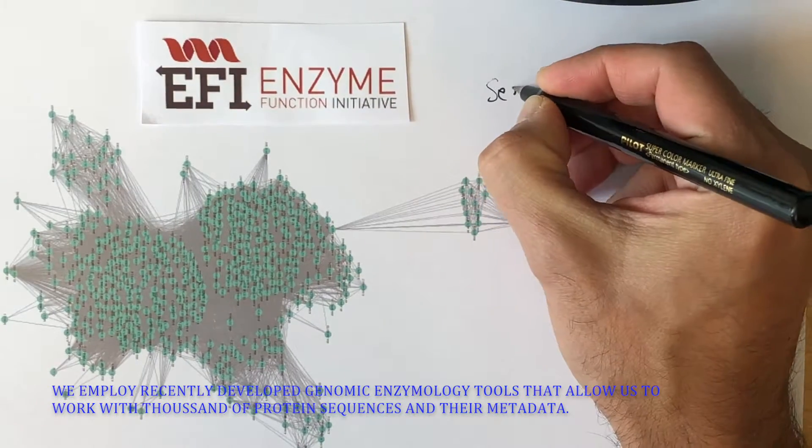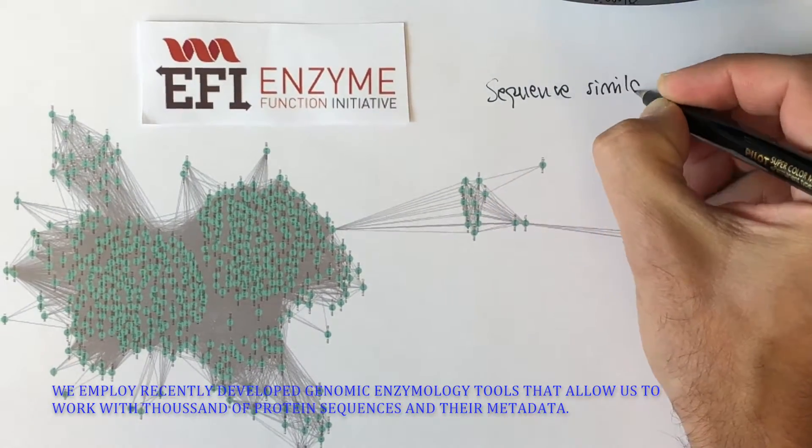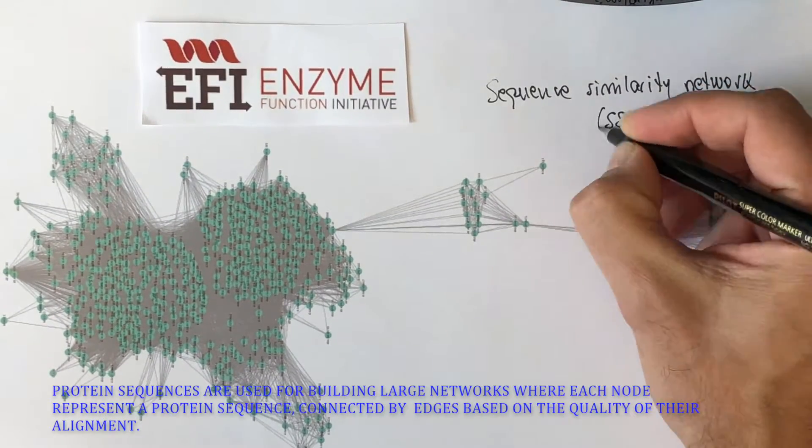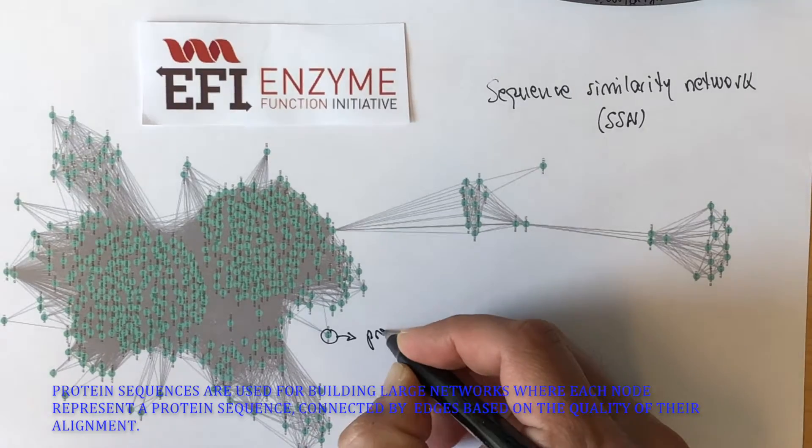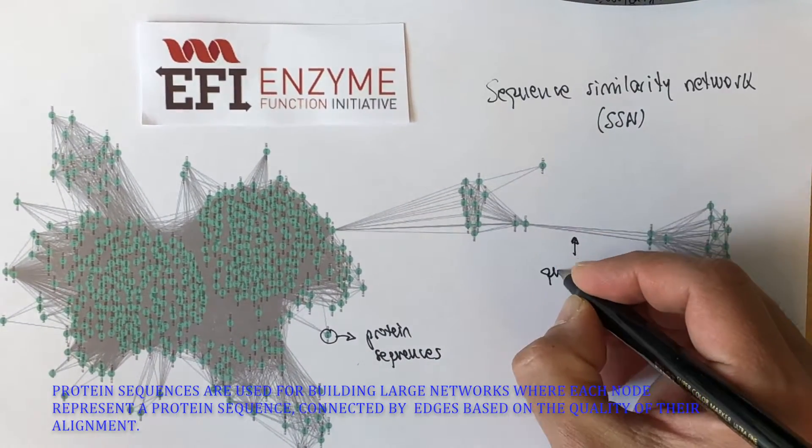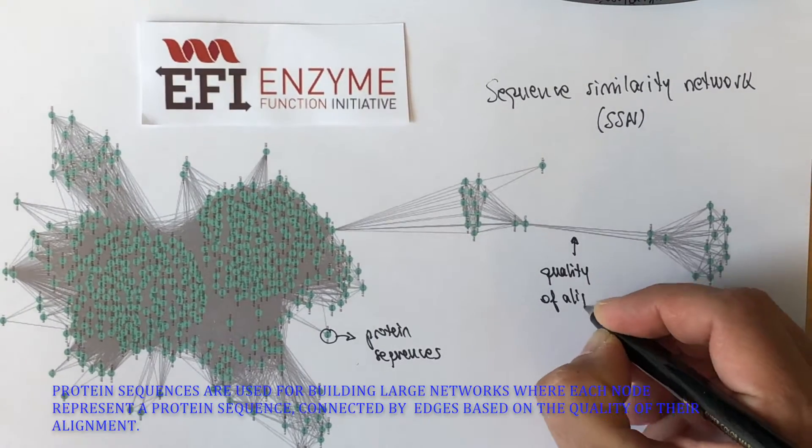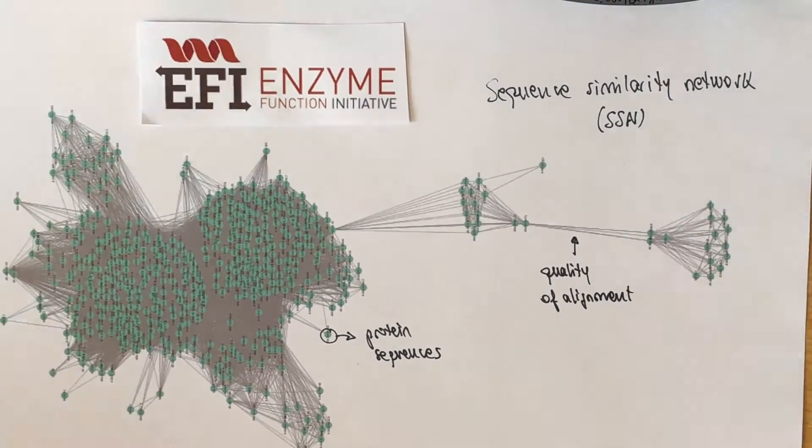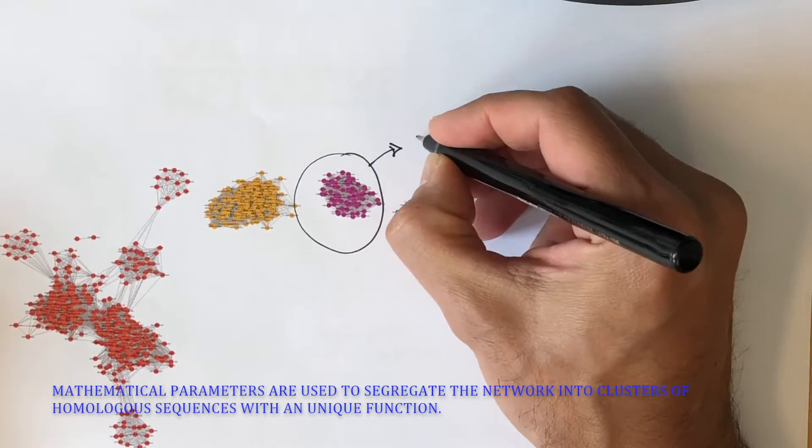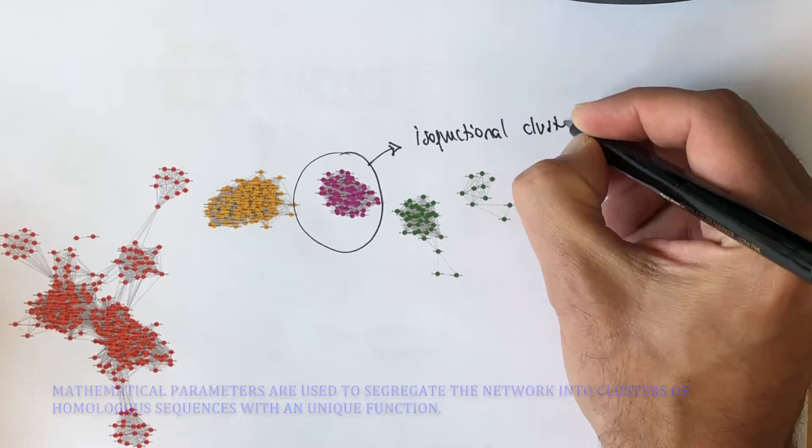We gene mine for relevant thermostable candidates by employing genomic enzymology tools recently developed by the Enzyme Function Initiative. Protein sequences are used to build large networks where each node represents a sequence or a group of sequences, and the edge a representation of the quality of their alignment. Based on mathematical parameters, we can segregate the networks into isofunctional clusters.